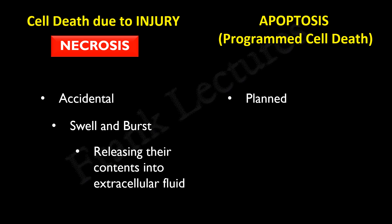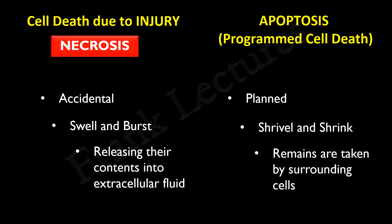On the other hand, cells undergoing apoptosis shrivel, contract, and shrink. Their remains are taken up by surrounding scavenger cells such as macrophages. Thus, apoptosis generally does not elicit an immune response.